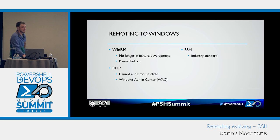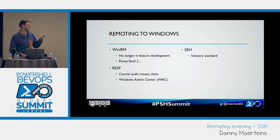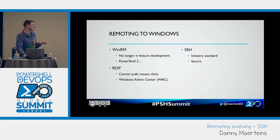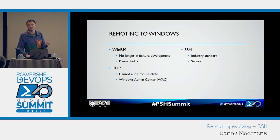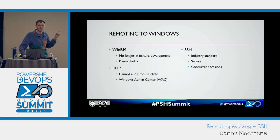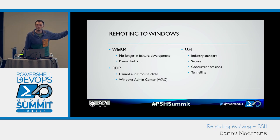SSH is the industry standard for remoting. In the broader heterogeneous environment ecosystem, everything Unix-based uses SSH. If you remote into a router, you use SSH. Windows has just been the exception. SSH is notoriously secure — it's probably only had five to ten CVEs over its whole lifecycle. SSH supports concurrent sessions, which is important when multiple administrators need to connect to the same machine. And lastly, tunneling — that's the bread and butter of SSH. Why open any other port if you can just tunnel over SSH?